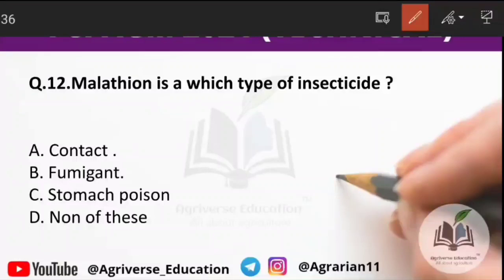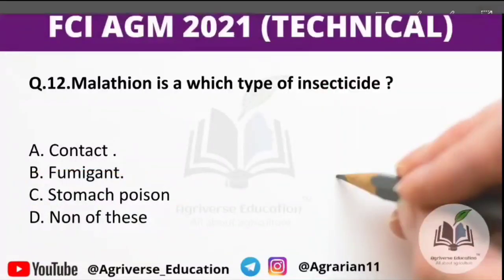Twelfth question: malathion is which type of insecticide — contact, fumigant, or stomach poison? Option C is the right answer — stomach poison. So, malathion is a stomach poison.